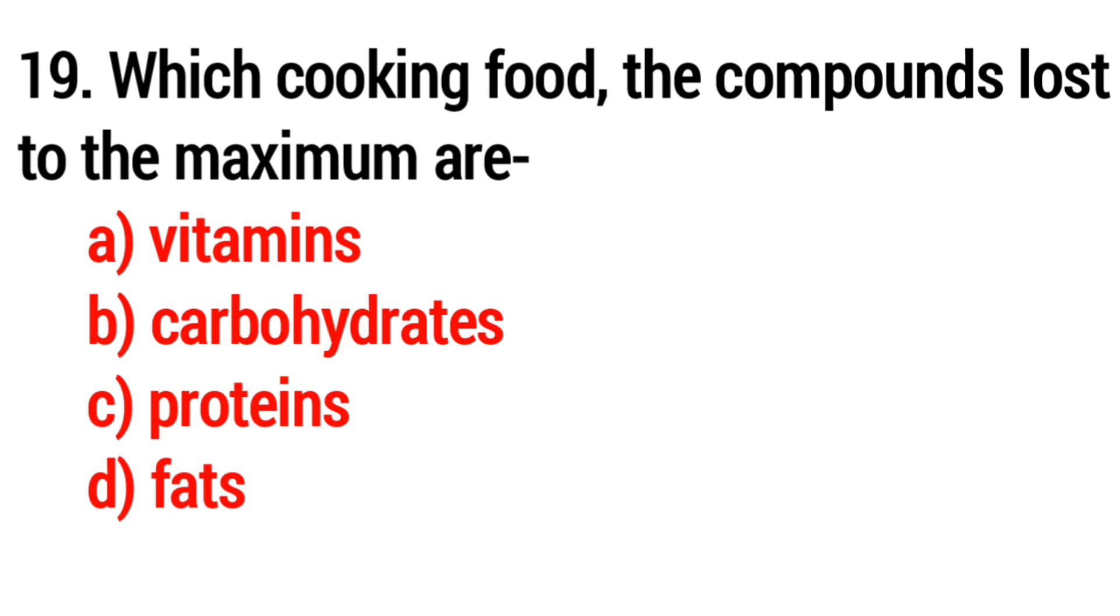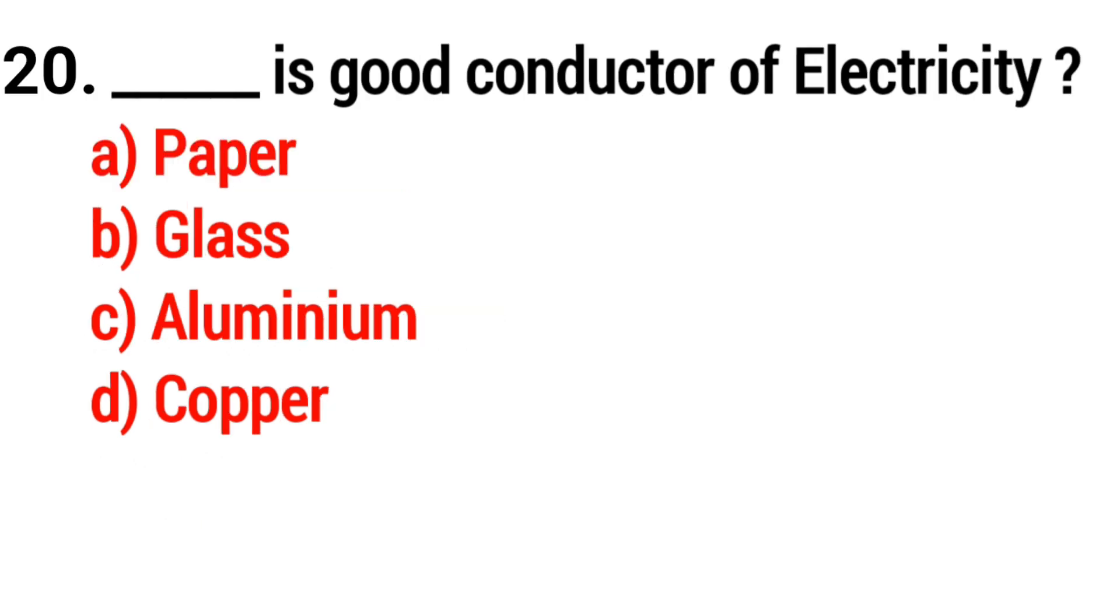Question 19: While cooking food, the compounds lost to the maximum are? The answer is Option A: vitamins. Question 20: Blank is a good conductor of electricity. The answer is Option D: copper.